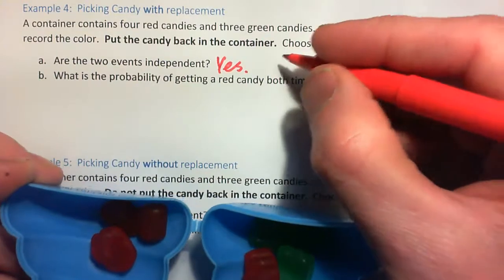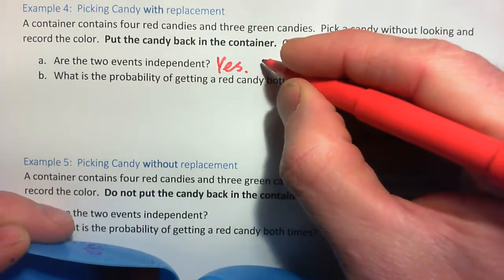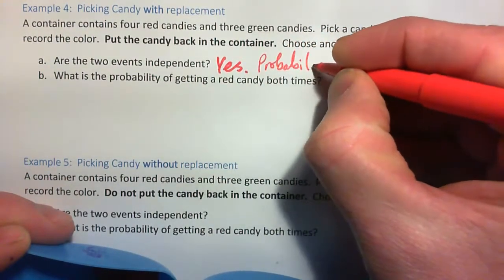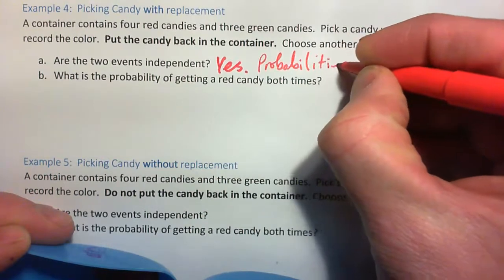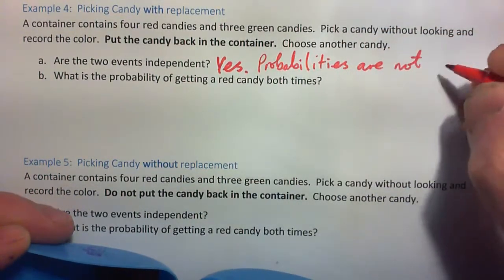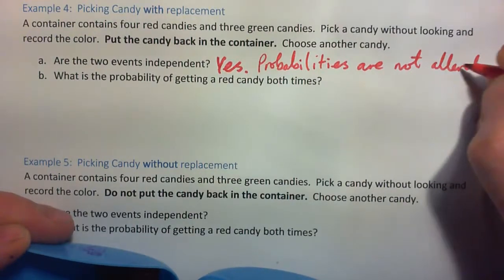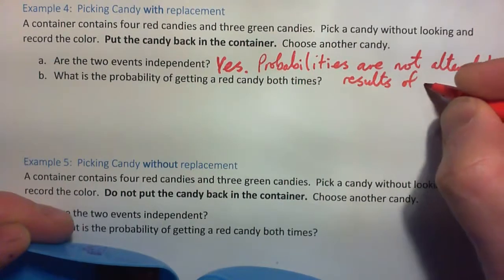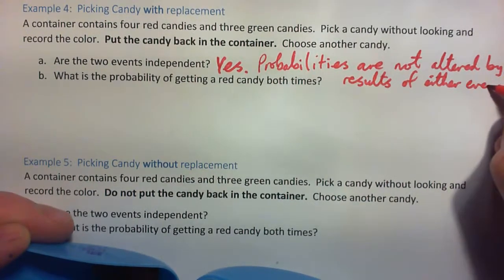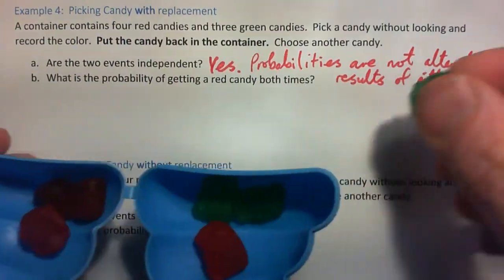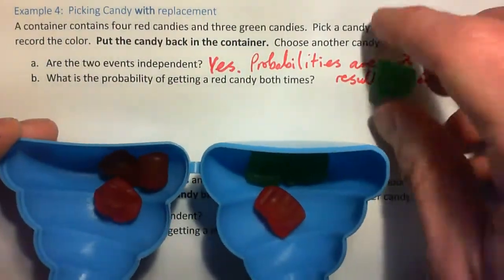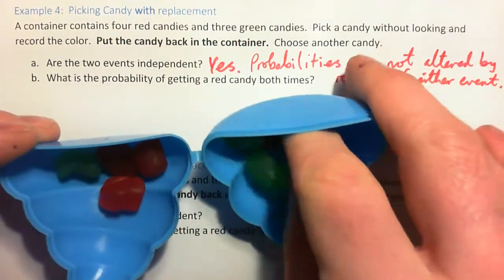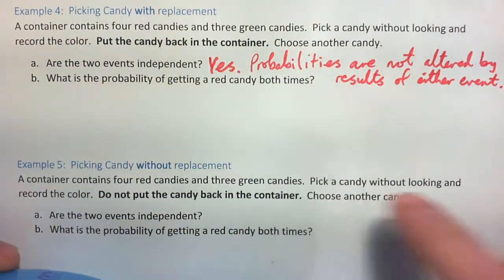The reason is the probabilities are not changed or altered by the results of either event. Say I get a green on the first go — I'm putting it back in anyway, so I could just as likely get another green or just as likely get a red. There's no change in the probability.